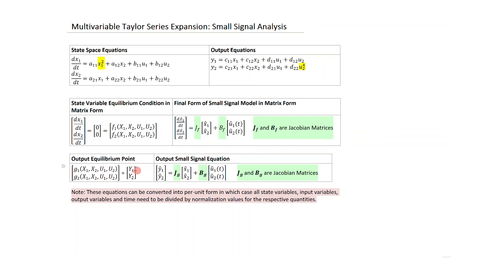The small signal model expresses small perturbations in state variables via a Jacobian matrix of partial derivatives with respect to X1 and X2, and with respect to U1 and U2, all evaluated at the operating point. Output equations similarly give equilibrium values and small signal perturbations. Converting to per unit form compresses the number range and simplifies computation.